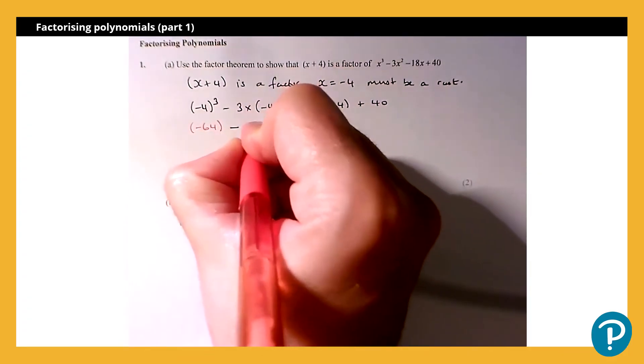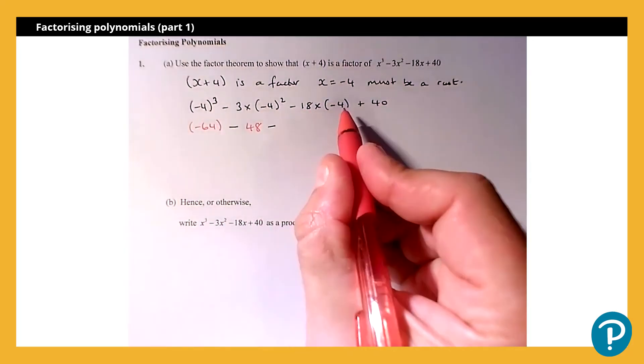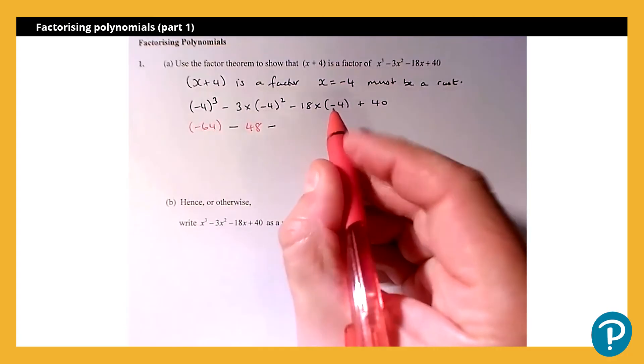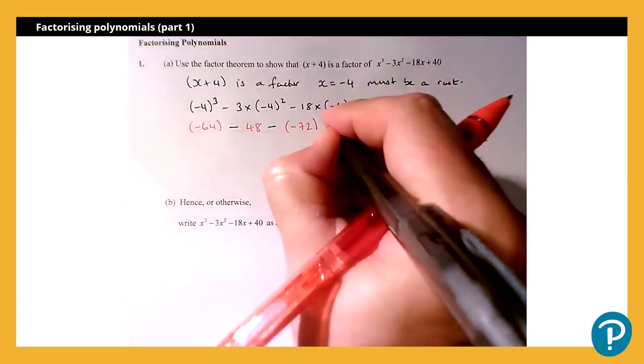Subtract 18 multiplied by -4 is -72, and then add 40 at the end.